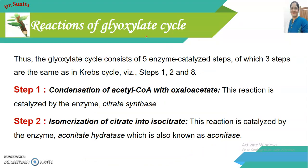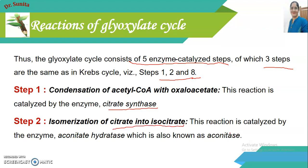Now we will discuss the reactions of the Glyoxylate cycle one by one. There are five enzyme-catalyzed reactions in the Glyoxylate cycle, of which three steps are similar to the Krebs cycle. The first step is condensation of Acetyl Coenzyme A with oxaloacetate — the same as in the Krebs cycle — forming citrate with the help of the enzyme citrate synthase. The second step is isomerization of citrate into isocitrate with the help of the enzyme aconitase.